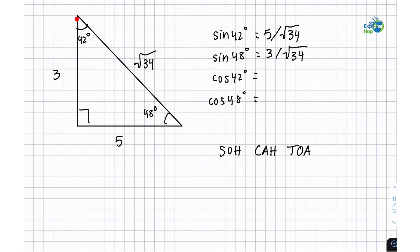So cosine of 42 degrees has an adjacent side of 3 so it would be 3 over the hypotenuse root 34, and cosine of 48 has an adjacent side of 5 so it would be 5 over root 34.